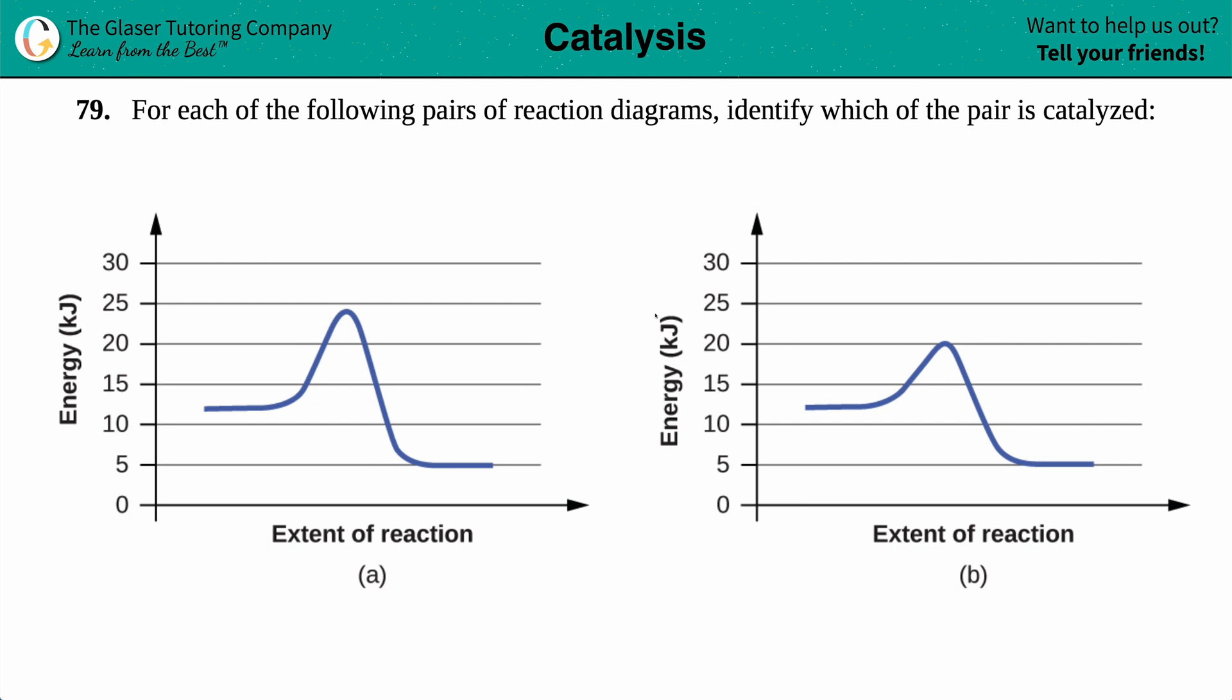Number 79. For each of the following pairs of reaction diagrams, identify which of the pair is catalyzed. So we have one pair here. We have a reaction lettered A and reaction lettered B, and we just need to know out of the two of them which one is catalyzed.